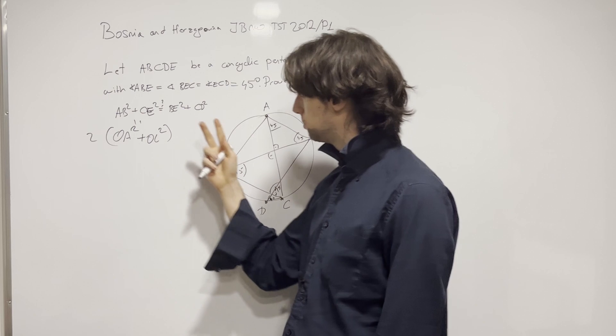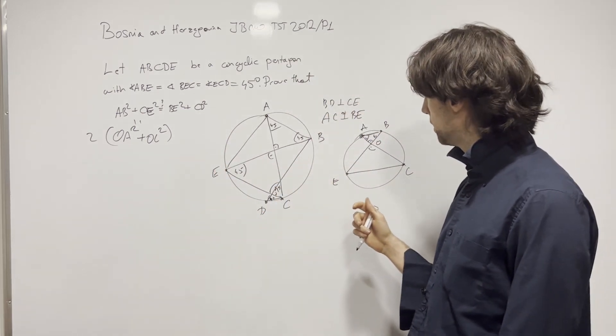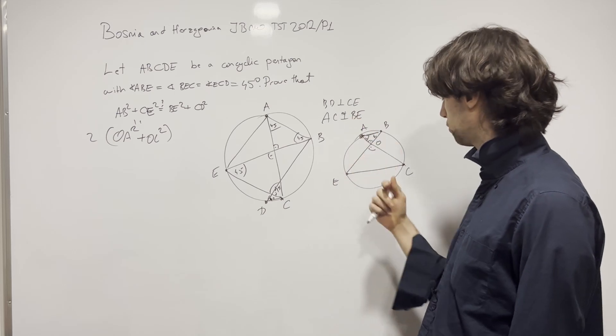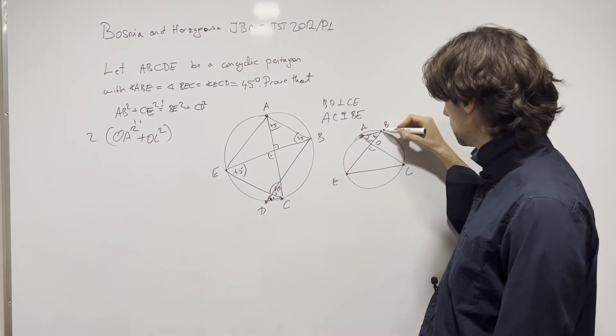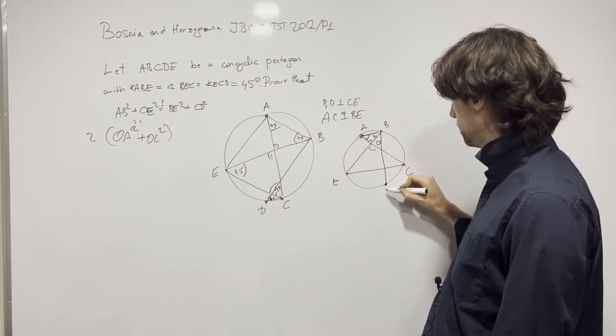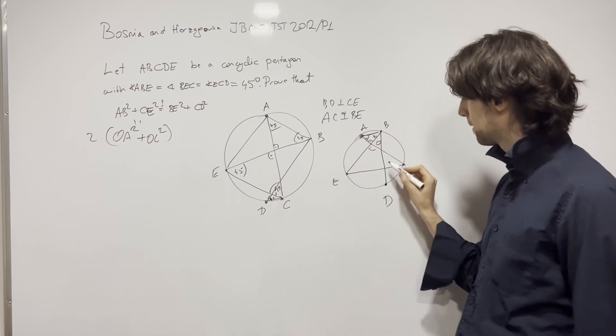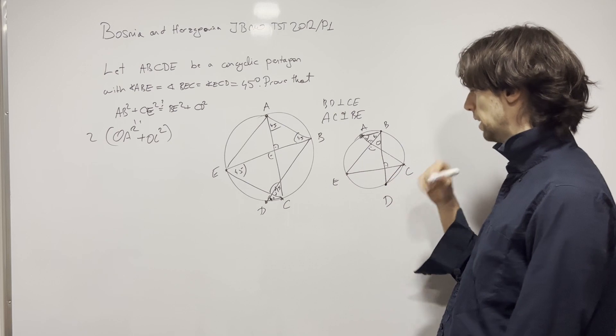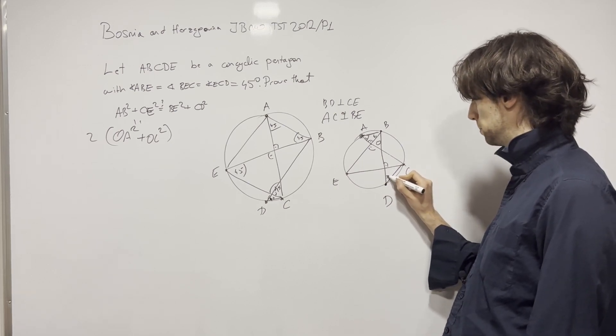Now, what do we need? We need BE. And what do we know about E? What do we know about D, actually? BD is perpendicular to this. And we know also that this angle is 45, though we can get that just from this perpendicularity.